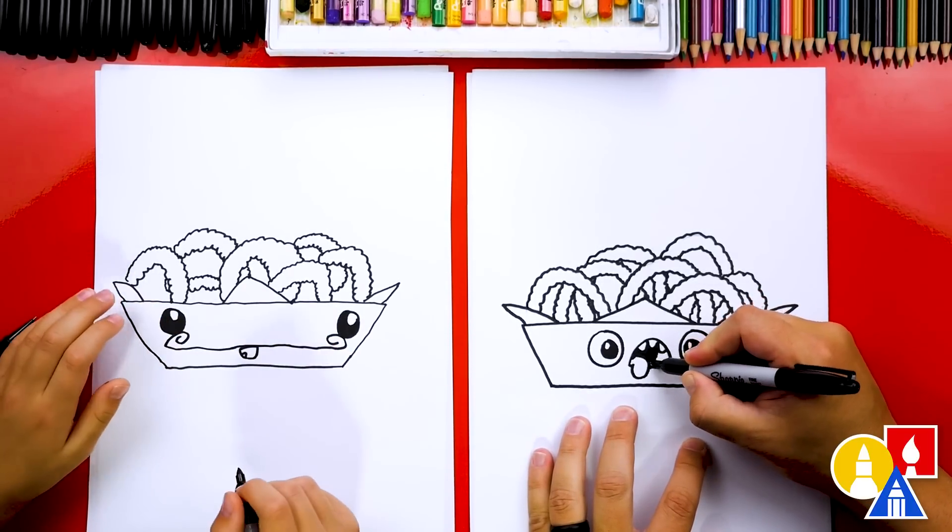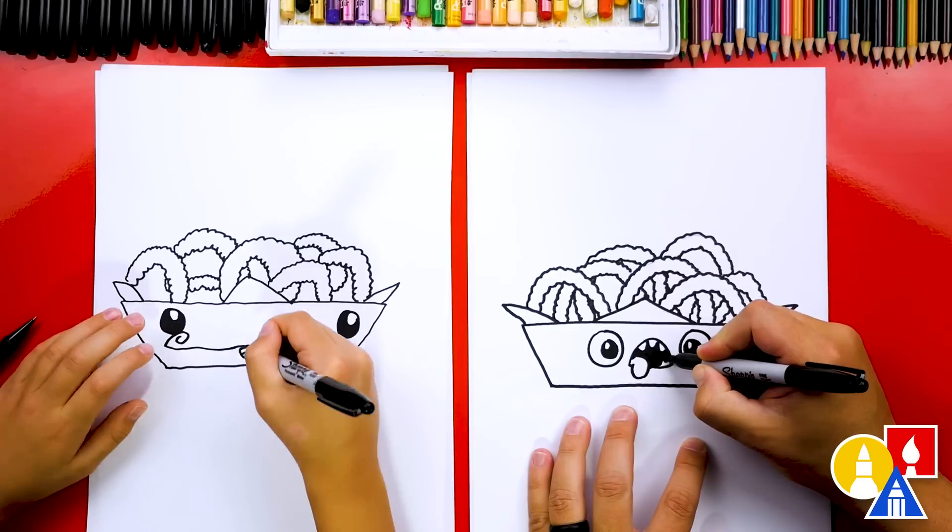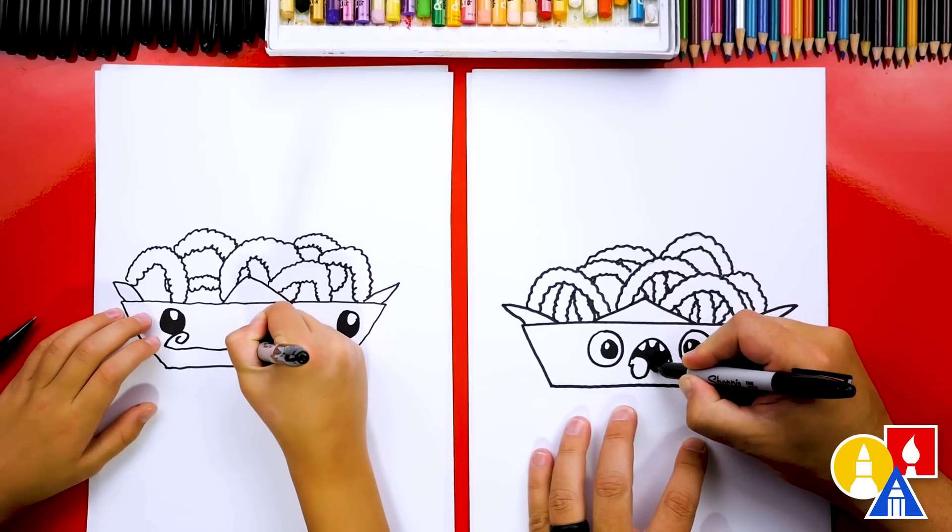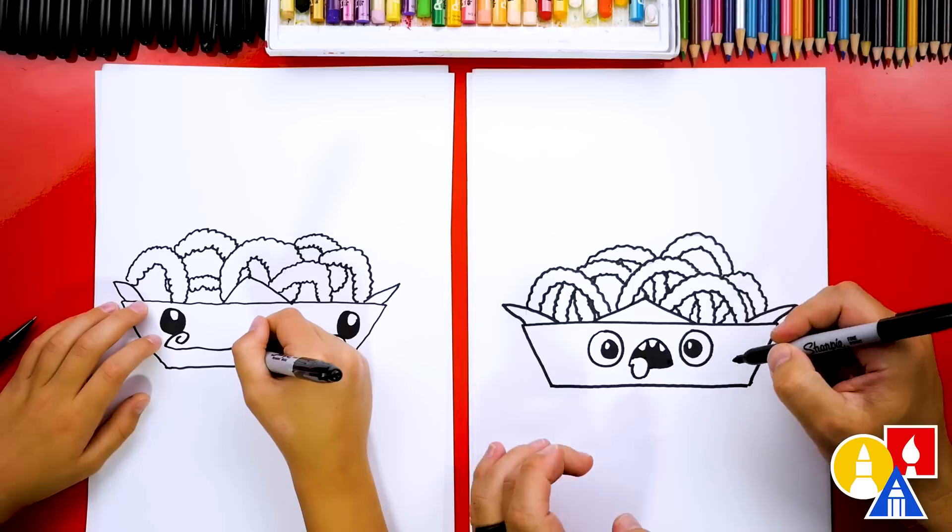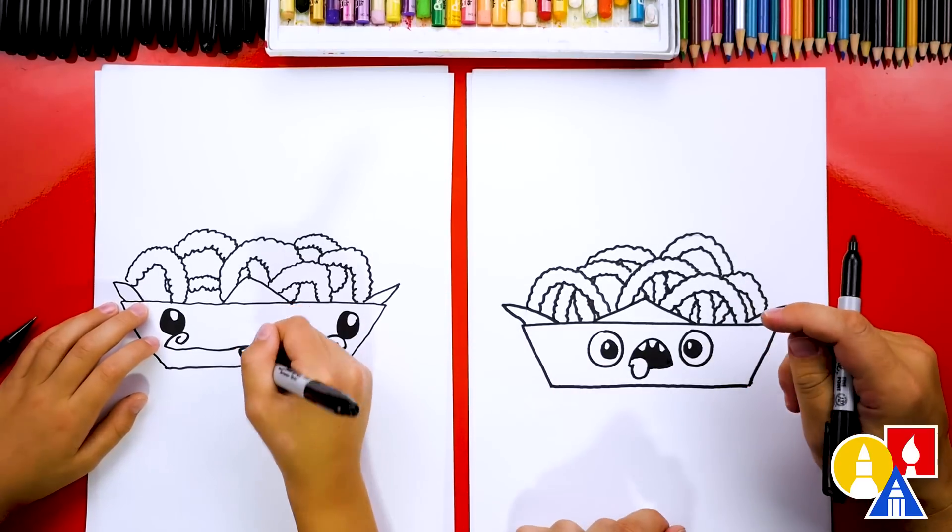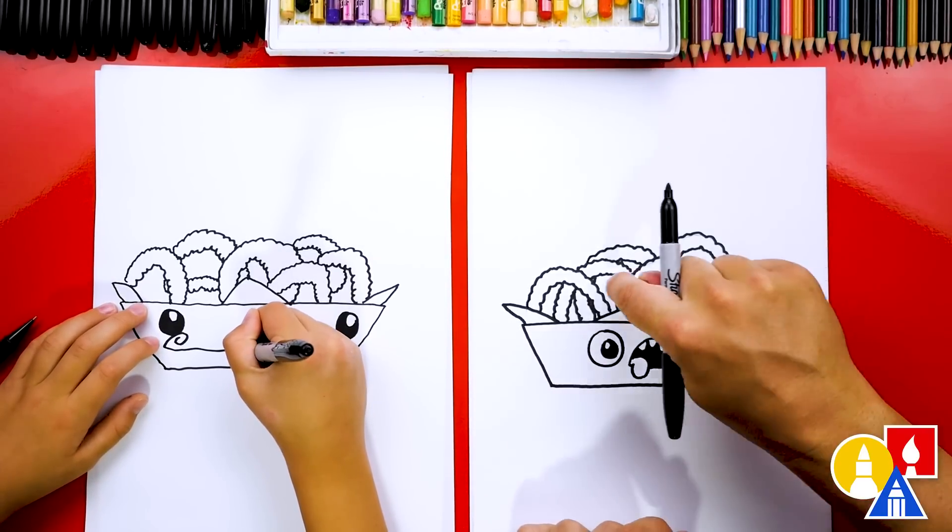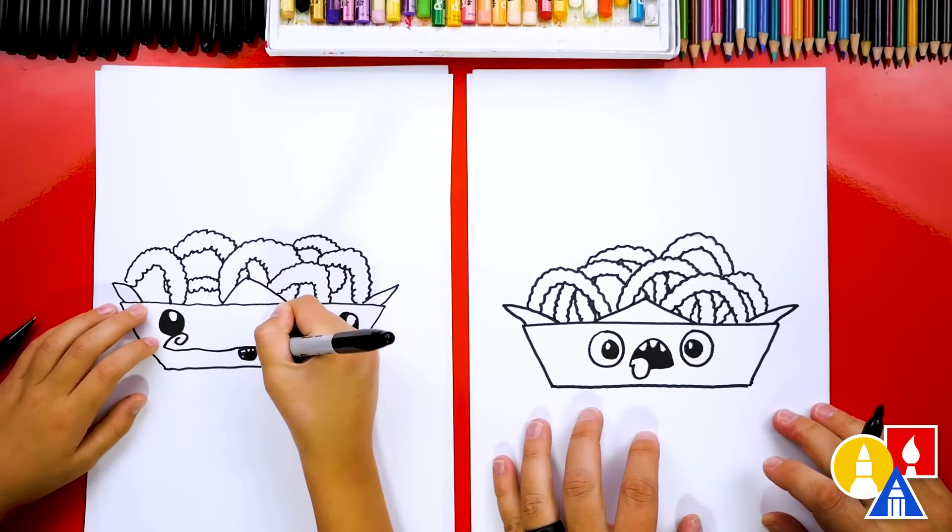Now, you guys can pause the video to match your funny faces, or really just add any funny face you want. You could add glasses. You could have one eye closing. You could have, oh, the funny faces on each onion ring would be super funny. Yeah. I love yours so much.